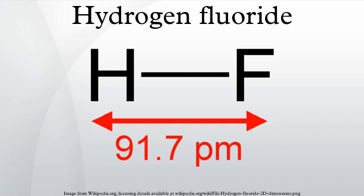French chemist Edmond Frémy is credited with discovering anhydrous hydrogen fluoride while trying to isolate fluorine, although Carl Wilhelm Scheele prepared hydrofluoric acid in large quantities in 1771, and this acid was known in the glass industry before then.